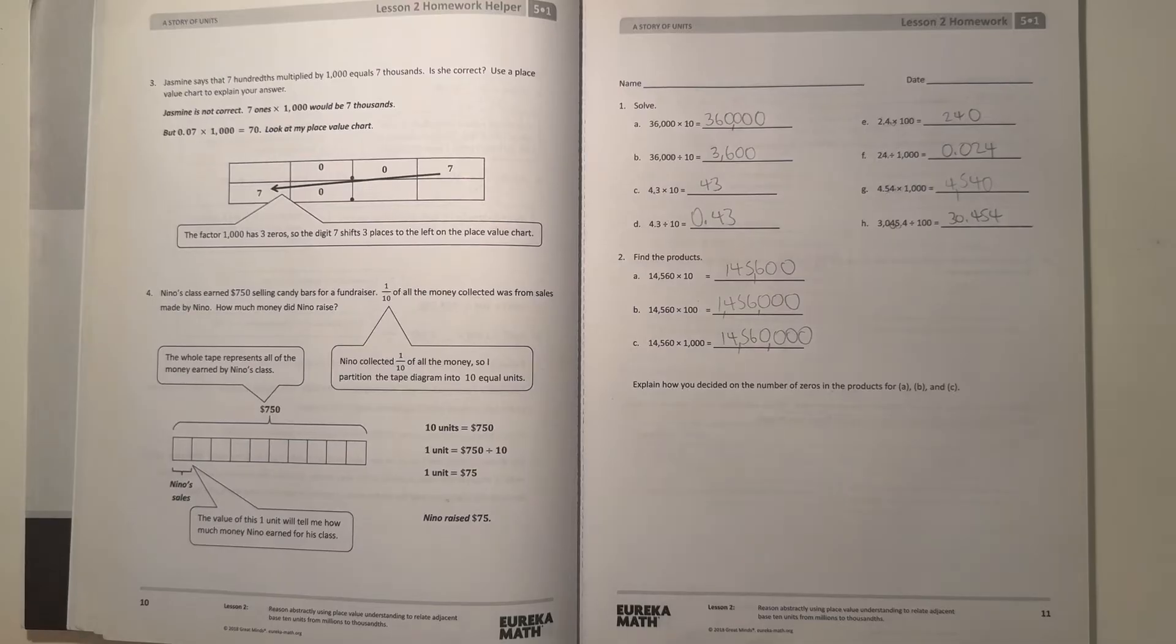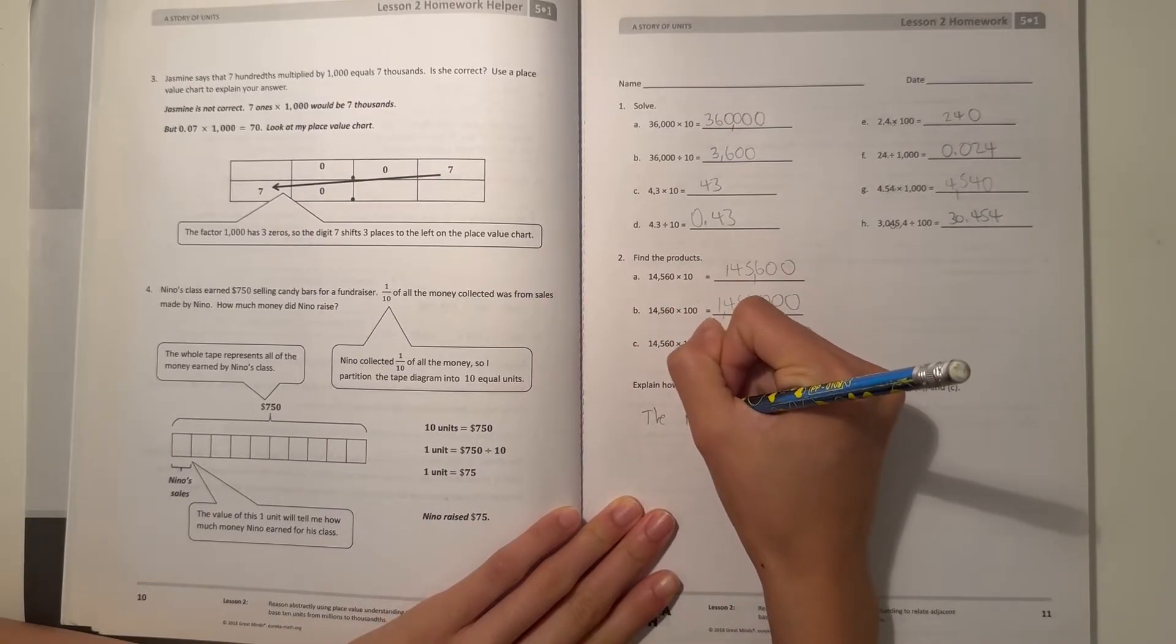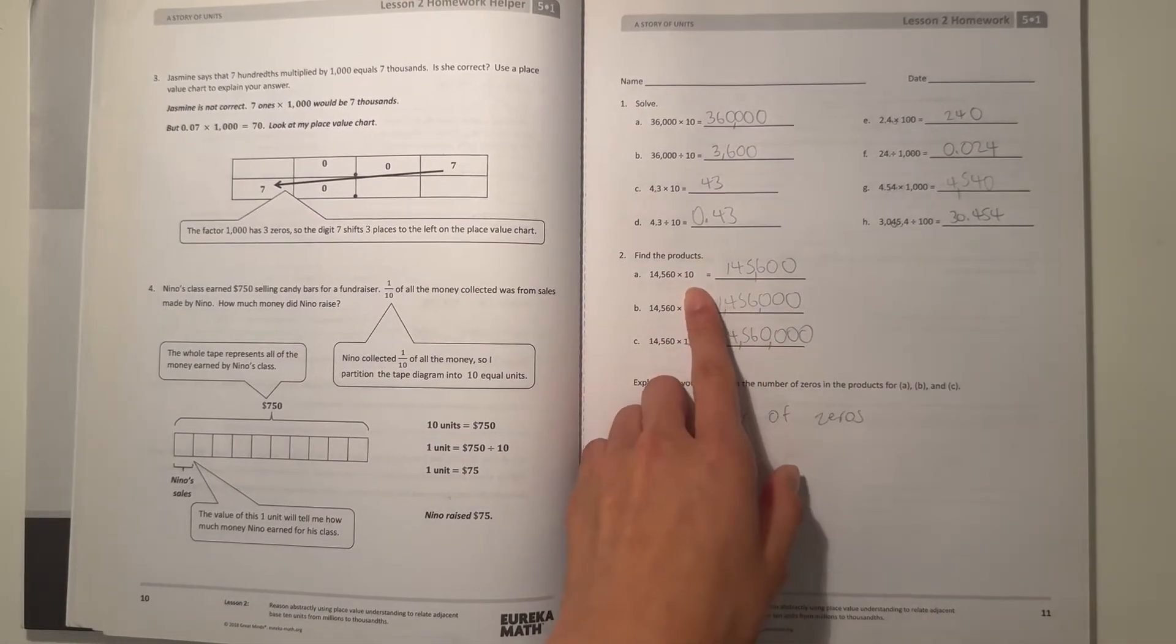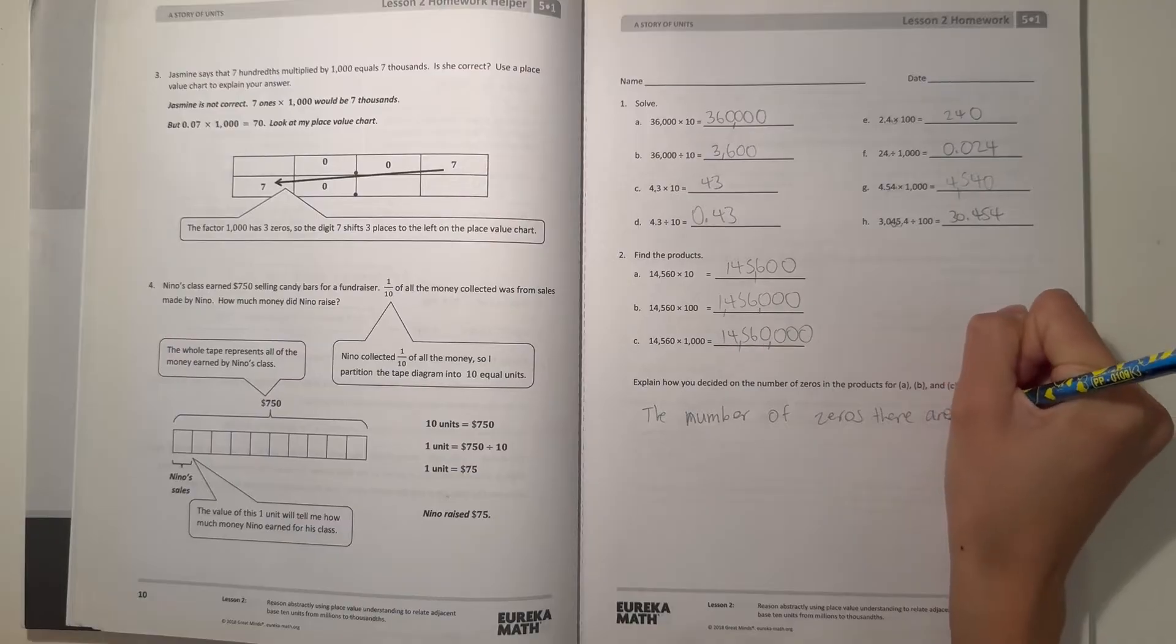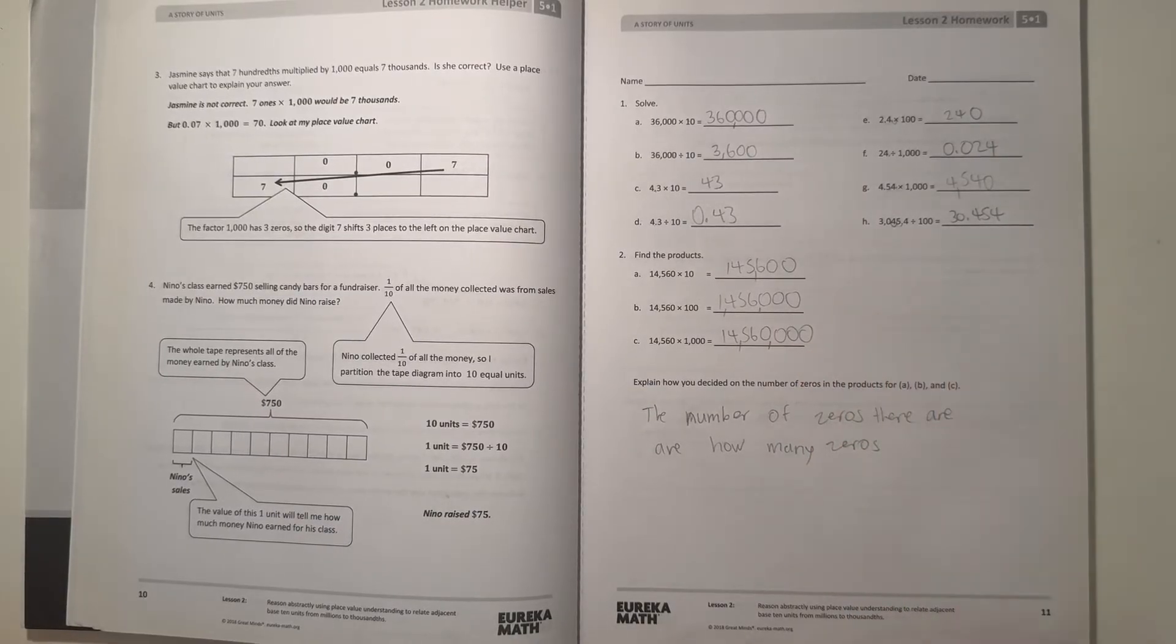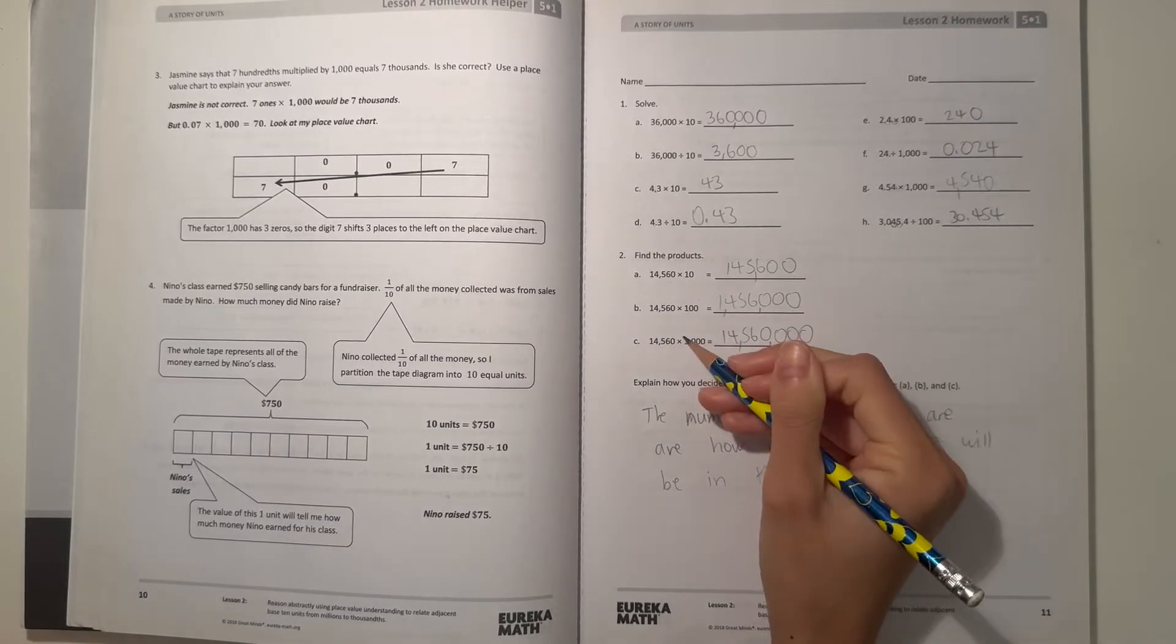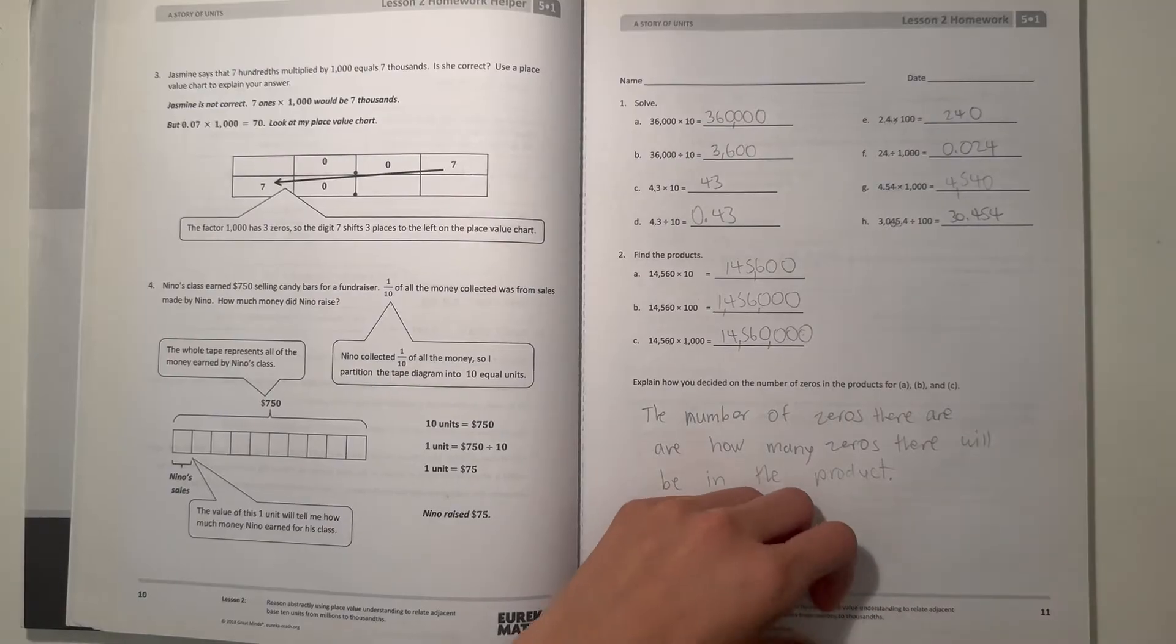And now it says, explain how you decided on the number of 0s in the products for A, B, C. Well, the number of 0s, like in the 10, 100, 1000, however many 0s there are in those numbers, that's how many 0s are going to be in the product. So yeah, because there's three 0s here, that means there's three 0s on the answer, and there's another 0 because of that 0.